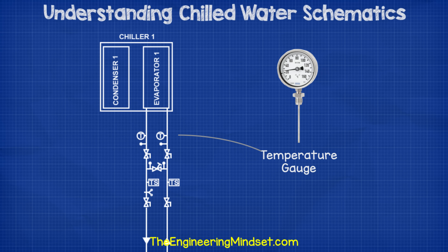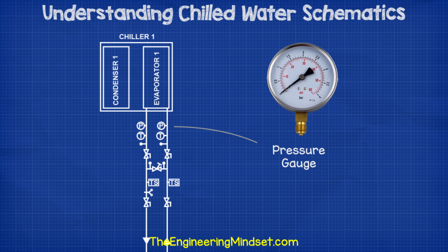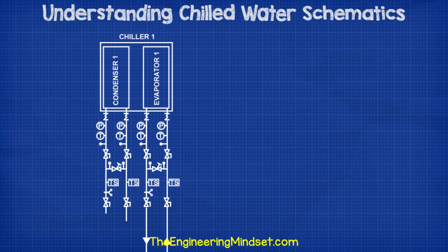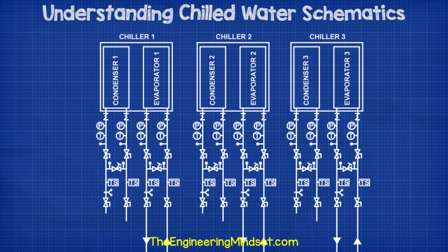Then we'll have some temperature gauges to manually take readings — over time these generally become less reliable and the gauges often get stuck. Then we'll have some pressure gauges to allow manual readings, which can also become less reliable over time. Then we'll have some flexible connectors, which prevent the vibrations of the pumps and the chillers from running along the pipes throughout the building, and they also allow the pipes to expand and contract slightly, which takes the pressure off the connection. We'll usually find an almost identical setup on the condenser side. This design is for a large commercial office building, so there will be multiple chillers, and all of them will have identical pipe arrangements.